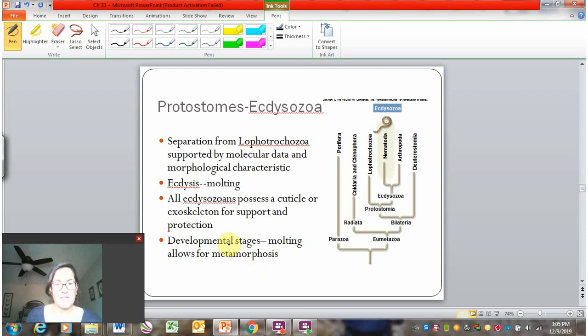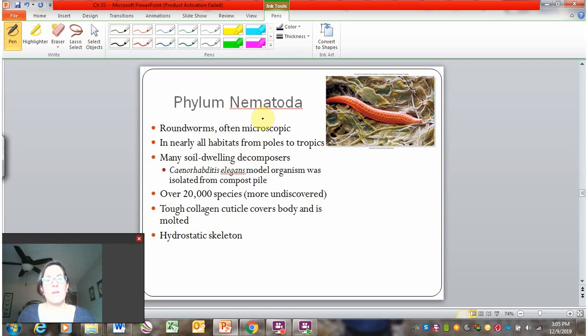So we'll briefly look at phylum nematoda. Phylum nematoda has the common name of roundworm. So a lot of worms that we talk about, so these are the roundworms. We've also talked about flatworms and segmented worms. Roundworms in phylum nematoda are often microscopic. So this is a roundworm here. This is a microscopic image. So you would not be able to see this with your naked eye. They exist in virtually all habitats. Many of them are soil-dwelling decomposers. So they're present in the soil. You just can't see them.